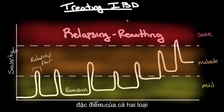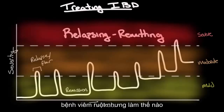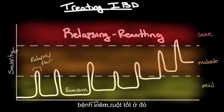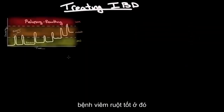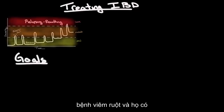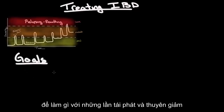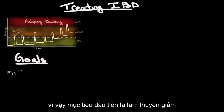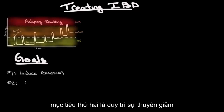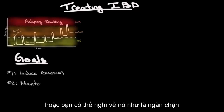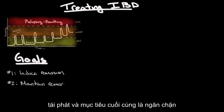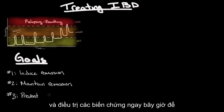This relapsing-remitting pattern is very characteristic of both types of inflammatory bowel disease. There are three goals to the treatment of inflammatory bowel disease, and they relate to these relapses and remissions. The first goal is to induce remission. The second goal is to maintain remission, or preventing relapses. And the last goal is to prevent and treat complications.